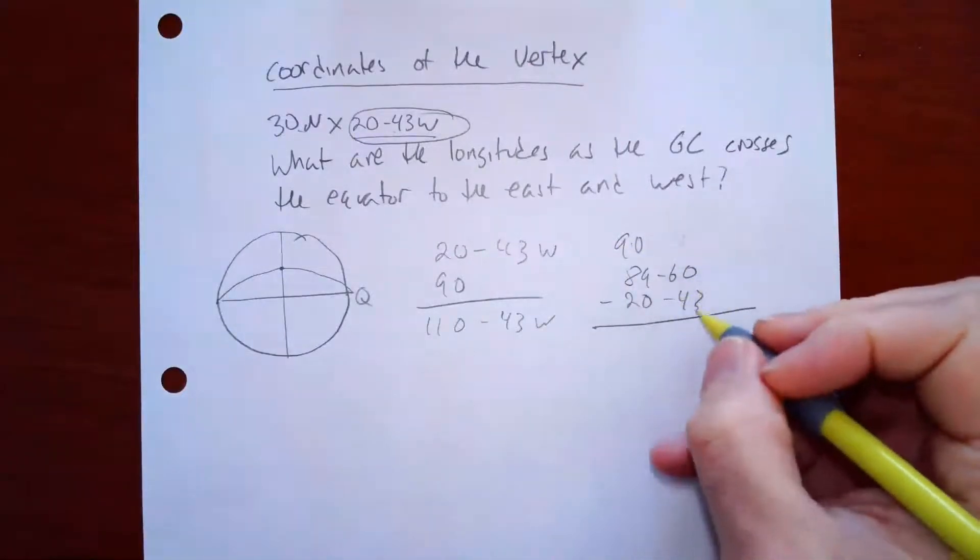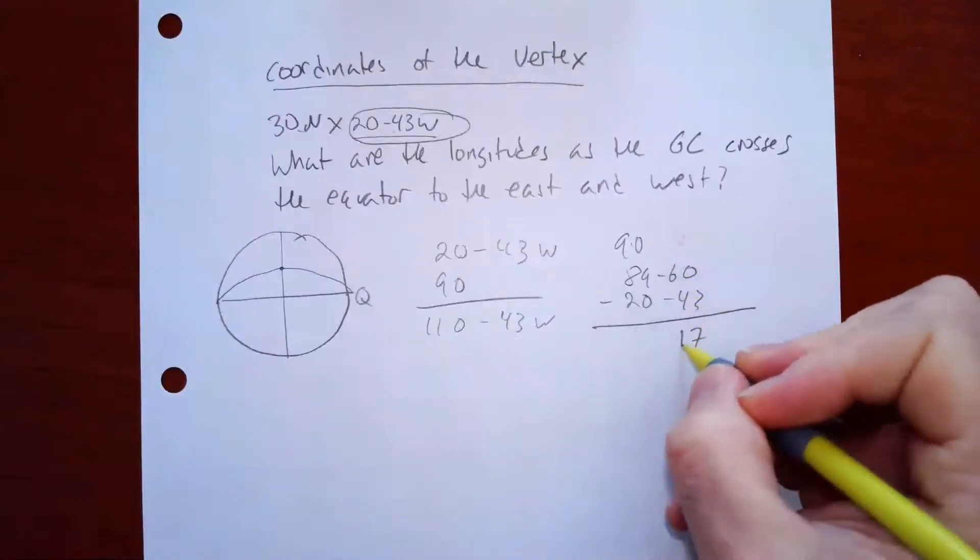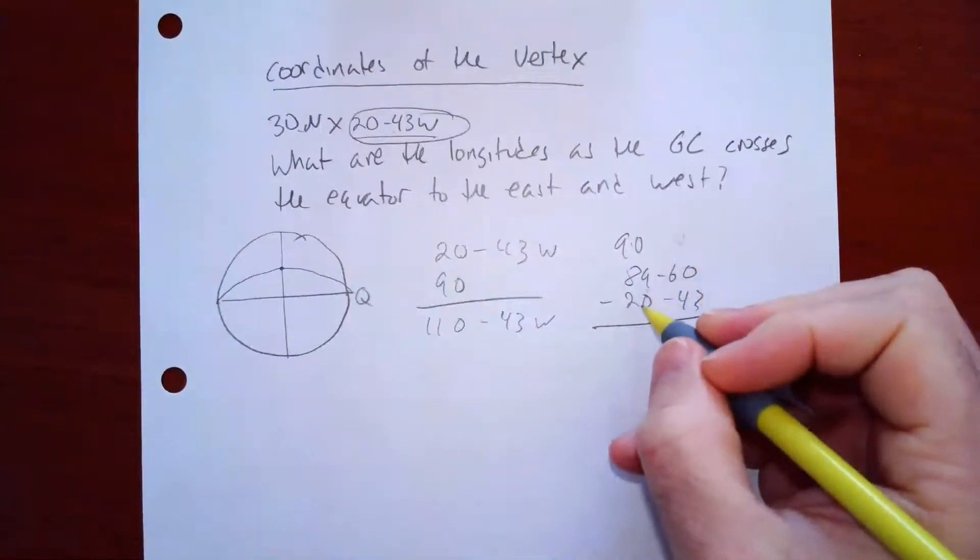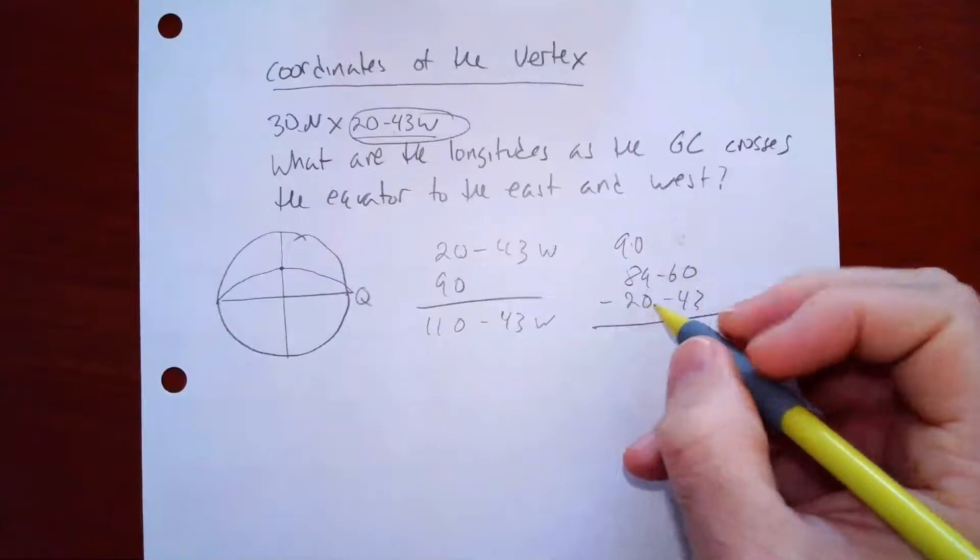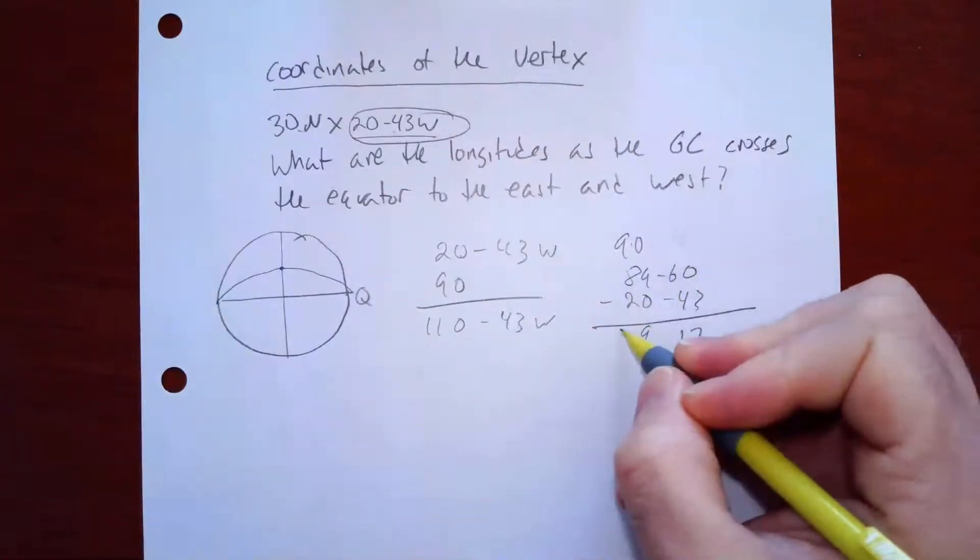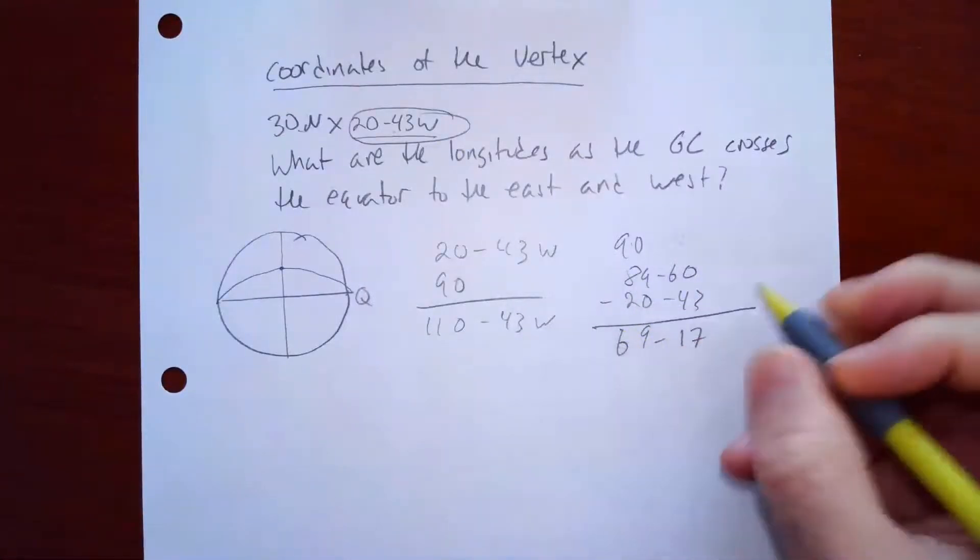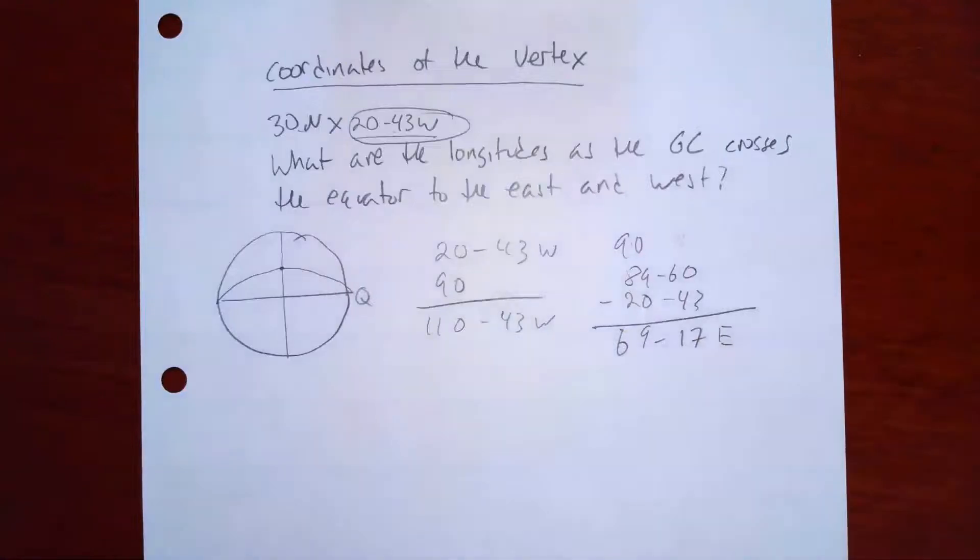Great. So now I can do that math easy. So that's going to be 17, and that will be, what was it? Is that 9 and 6? So that's 69, 17 east.